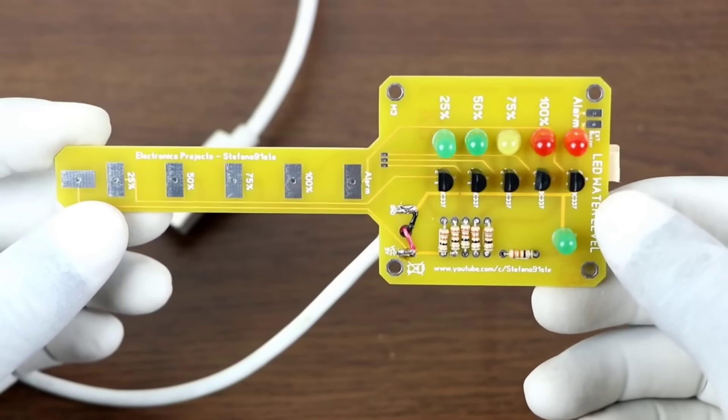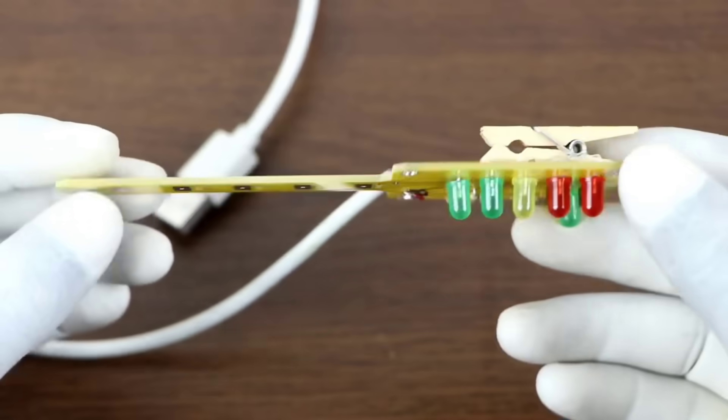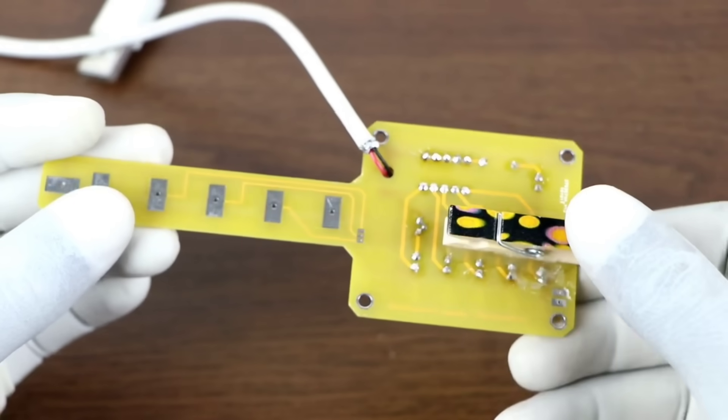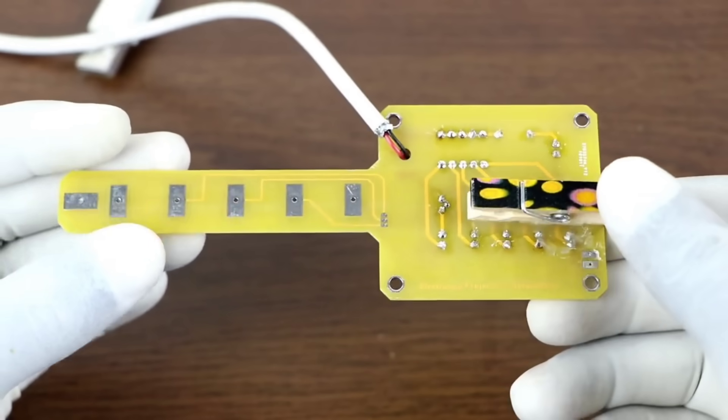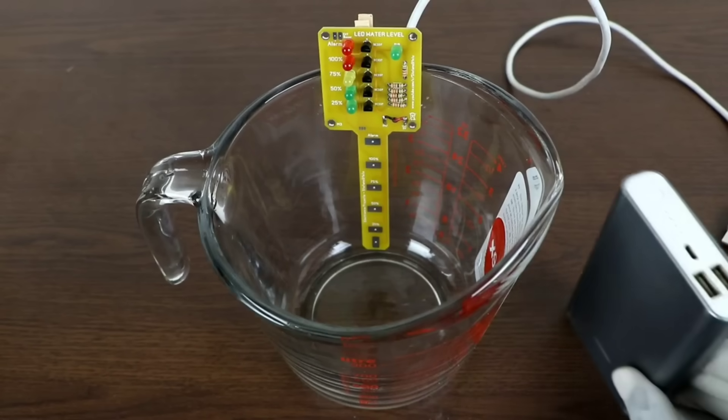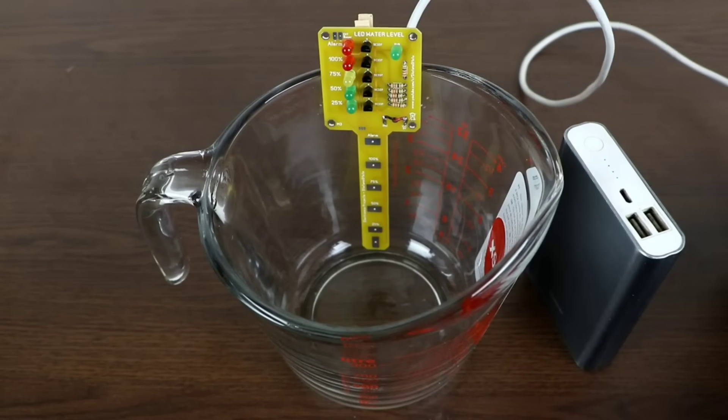Hey everyone, in this video we're going to build a very practical and easy to make water level indicator. This system is designed to help you avoid unnecessary water wastage by clearly showing the exact level of water inside your tank.